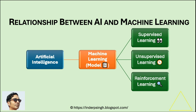Reinforcement learning: this type of learning is about training the model to make a sequence of decisions by rewarding it for correct decisions and penalizing it for mistakes. In software testing, this could be used to refine test case generation where the model learns to create effective tests based on feedback.